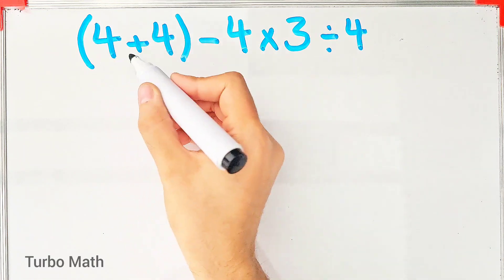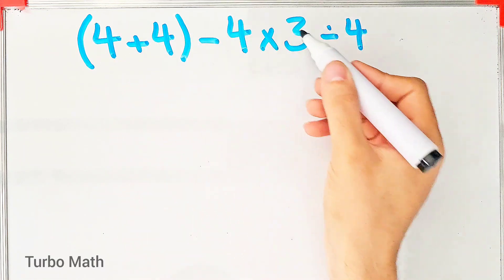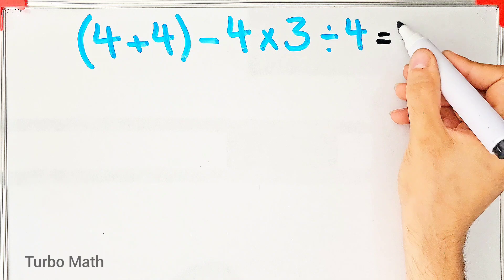Hi friends, welcome to Turbo Math channel. 4 plus 4 minus 4 then times 3 then divided by 4. What is the answer of this question?